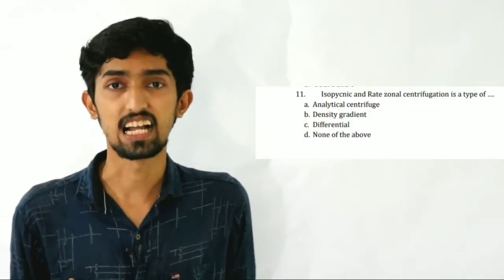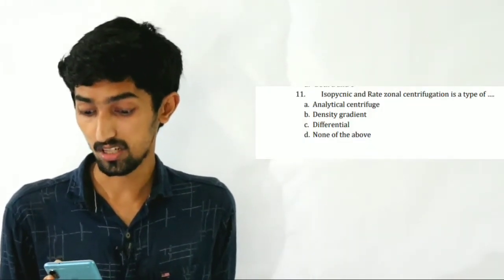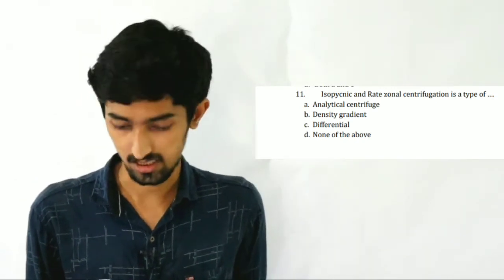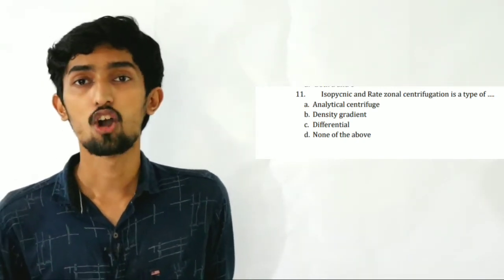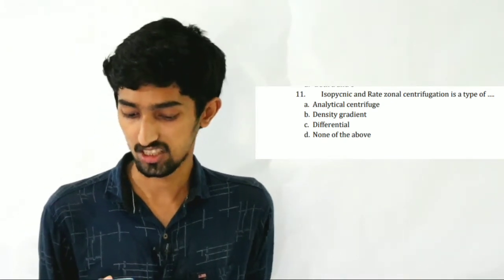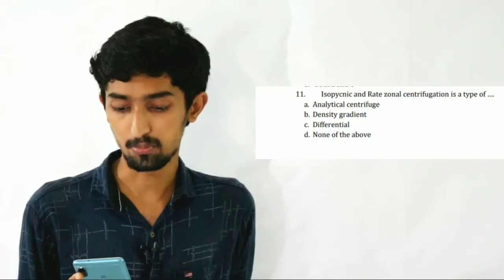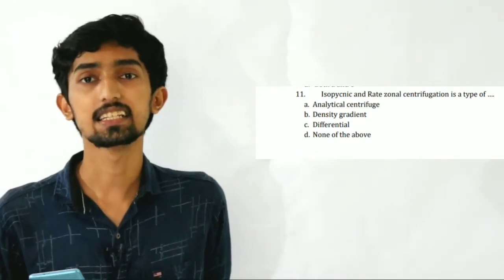The next question is: Isopicnic and zonal centrifugation is a type of — Option A: Analytical centrifuge. Option B: Density gradient centrifuge. Option C: Differential centrifuge. Option D: None of the above. The answer is Option B: Density gradient centrifugation.